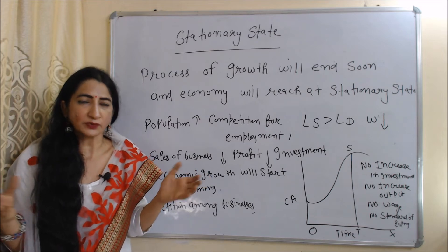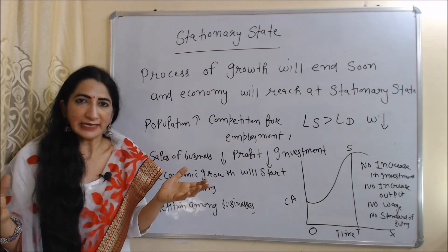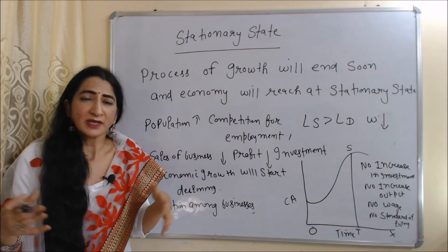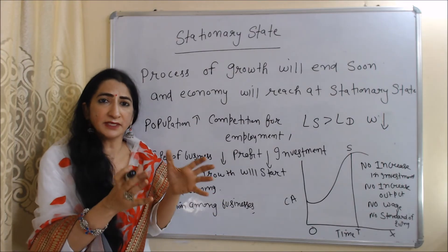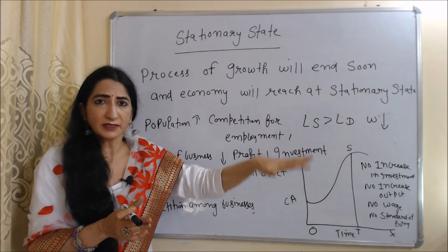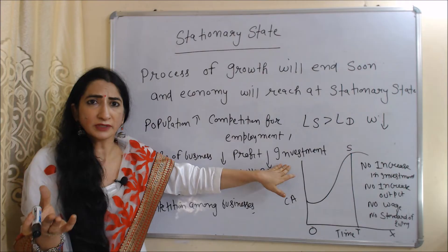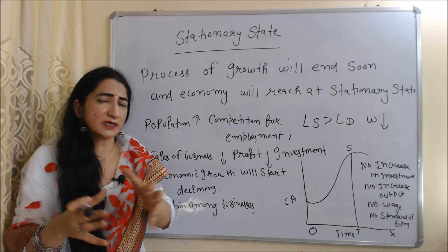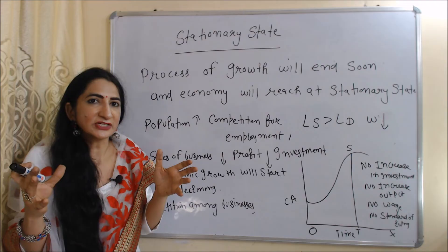However, according to Adam Smith, the process of growth will end soon and the economy will move towards a stationary state. This happens because as population increases, competition for employment also increases — more people enter the market seeking jobs, which drives wages down toward subsistence level, reducing saving and investment. As a result, economic growth starts declining and the economy moves towards the stationary state.